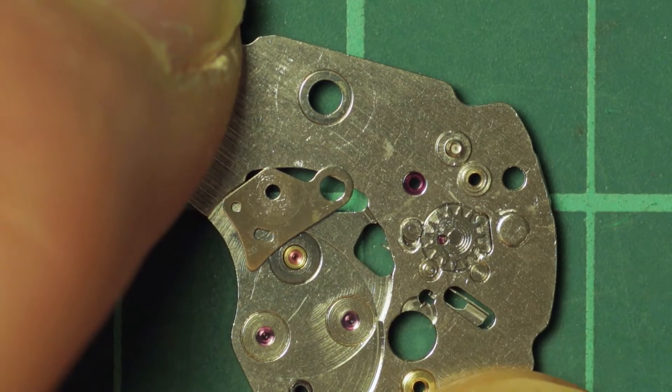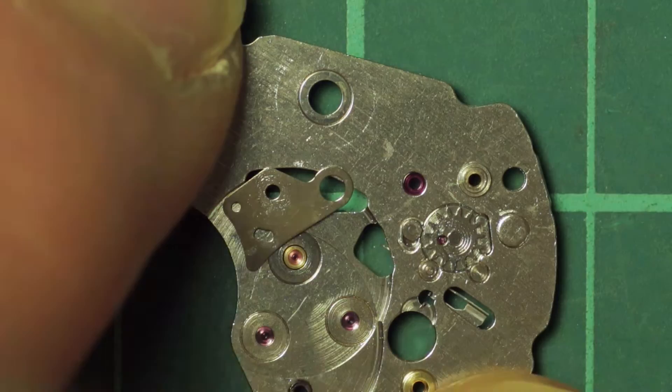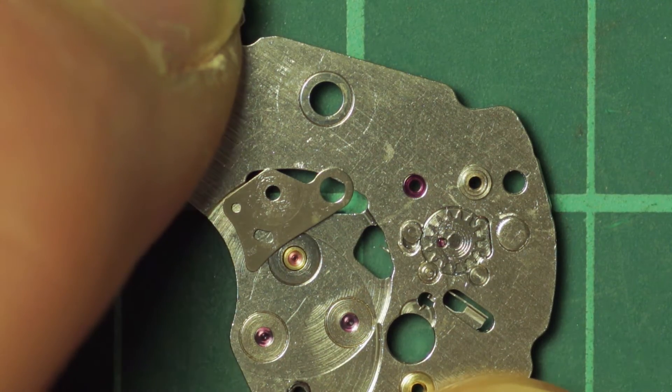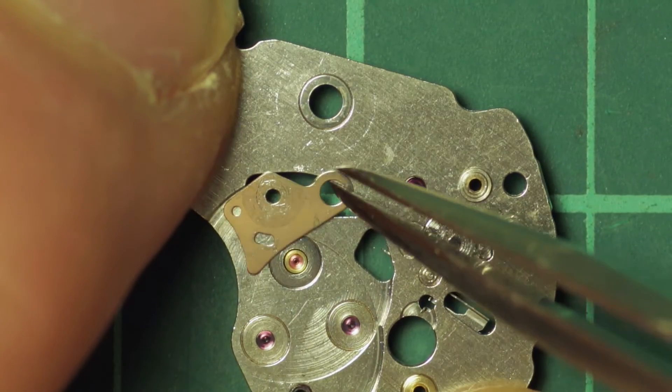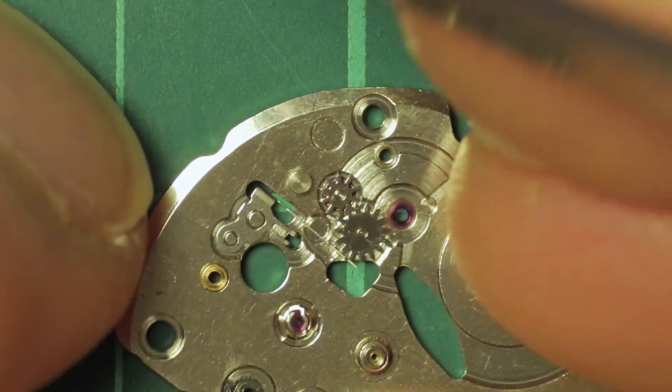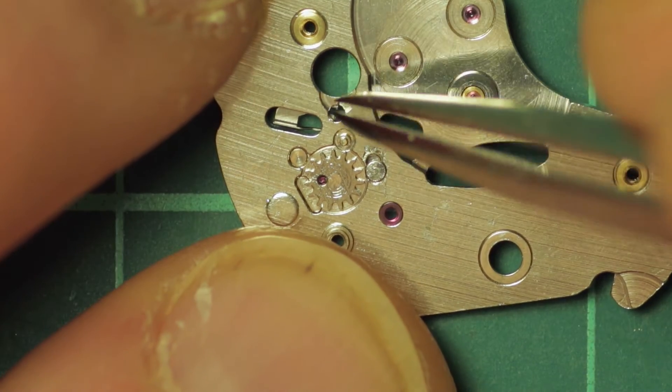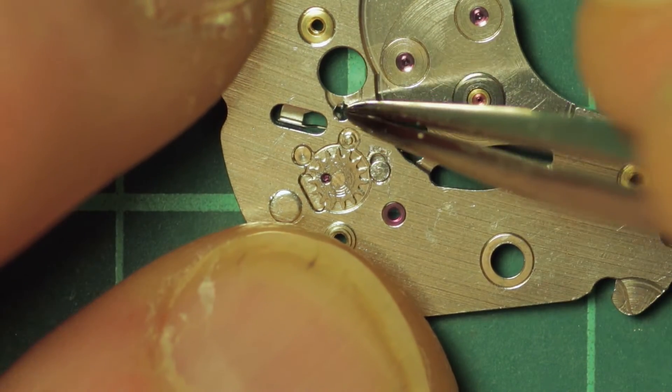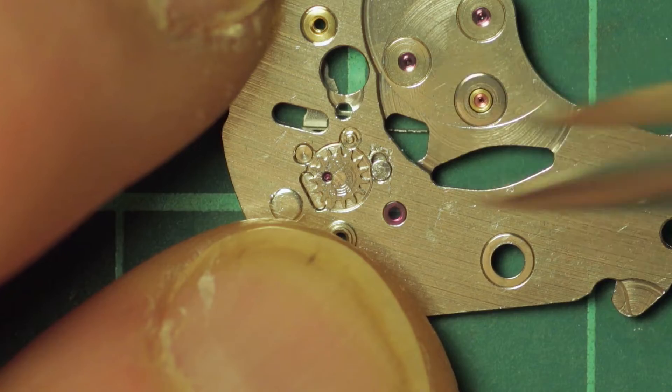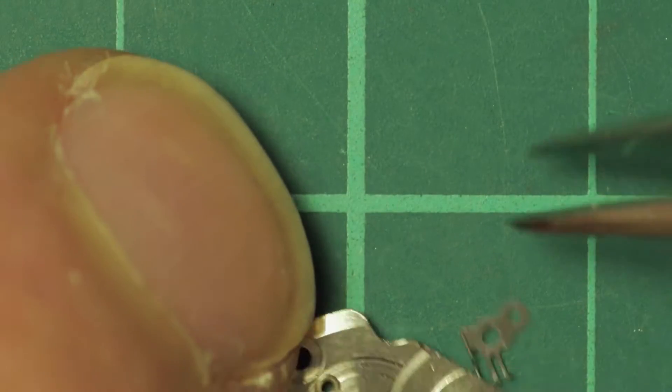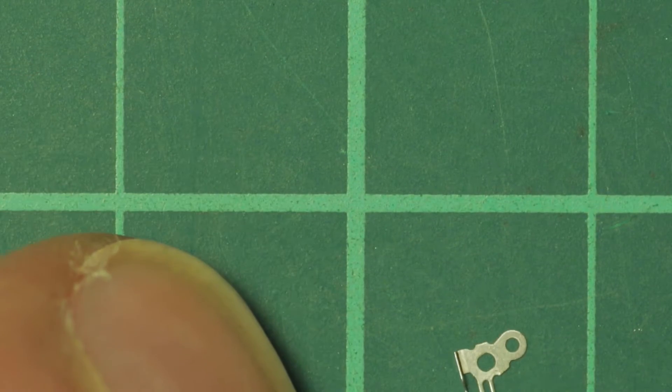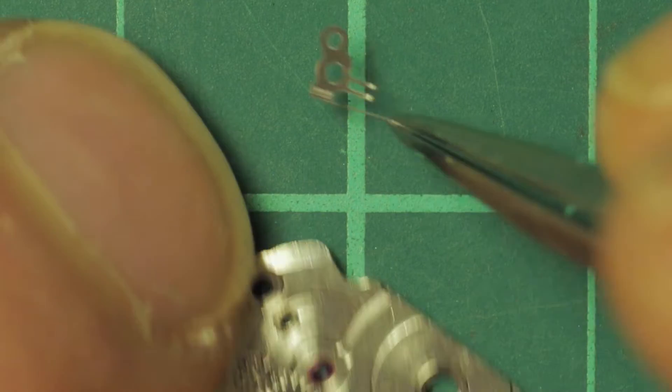And here you see a cover plate which has just been removed. This doesn't actually hold anything in place, it's merely a cover plate for the gears that you see there. And the small spring simply clips into place so that's just pushed out from the other side. And that just provides spring tension to one of the gear wheels.